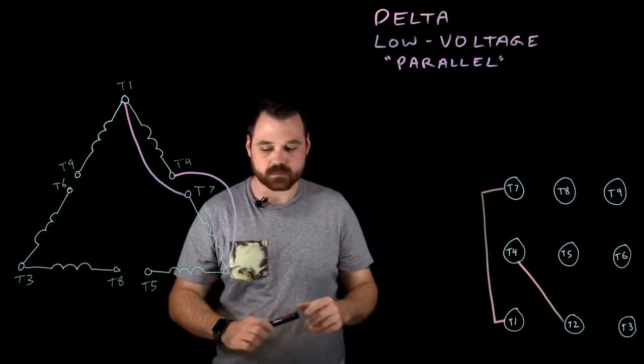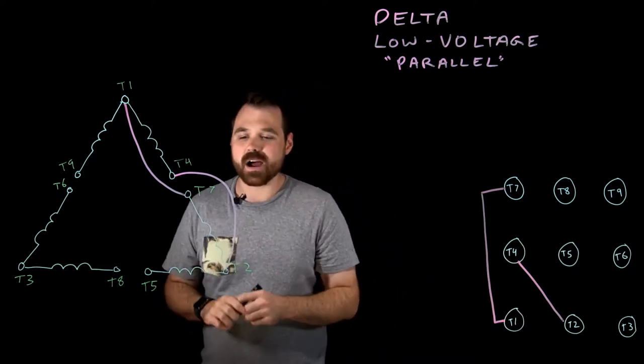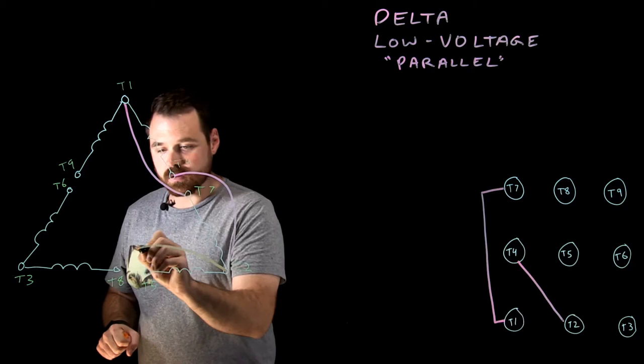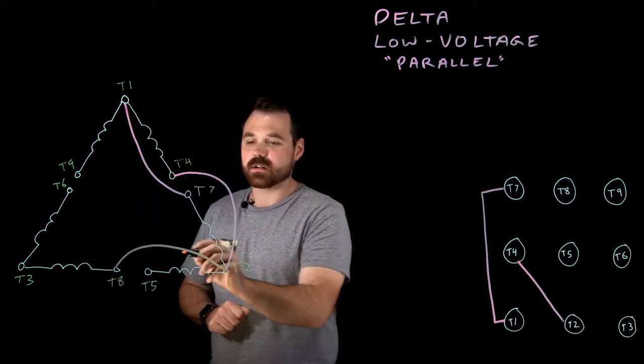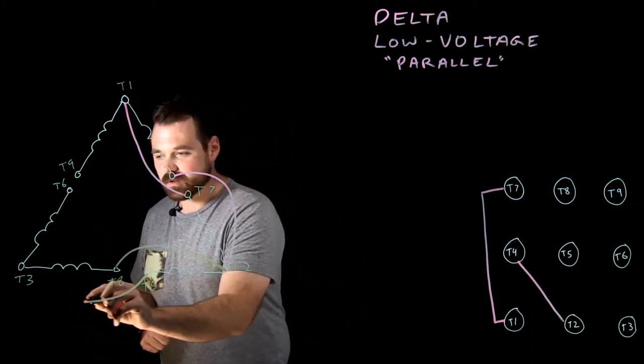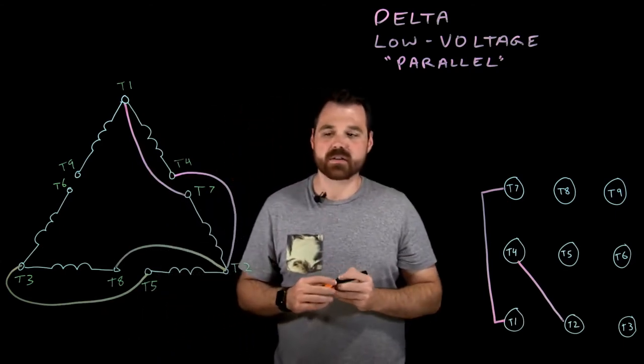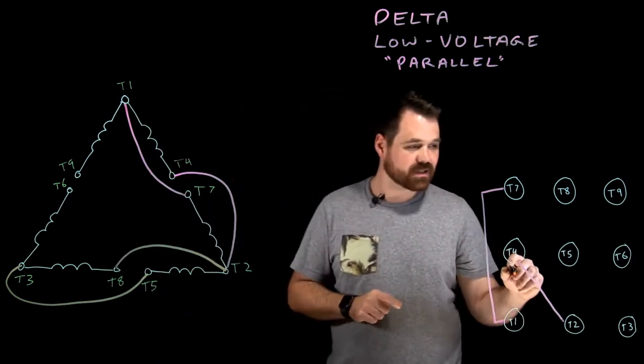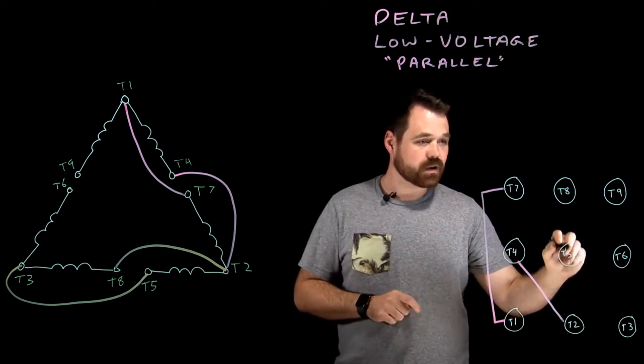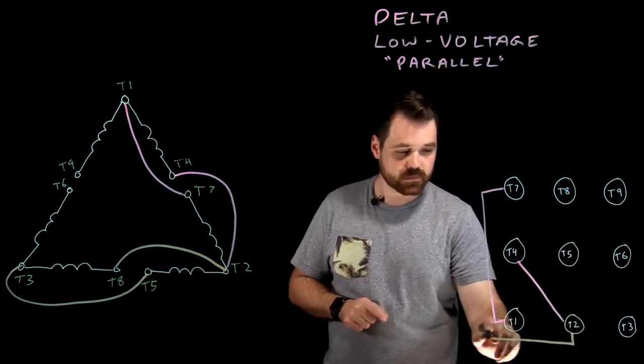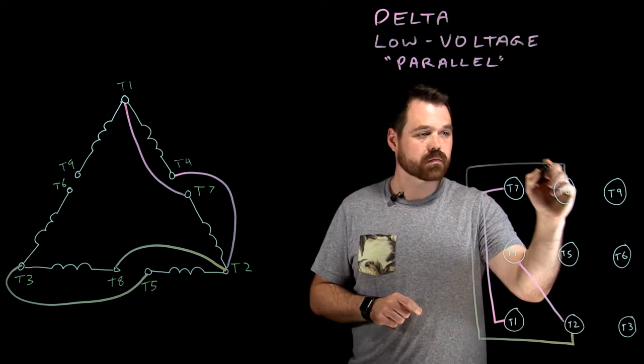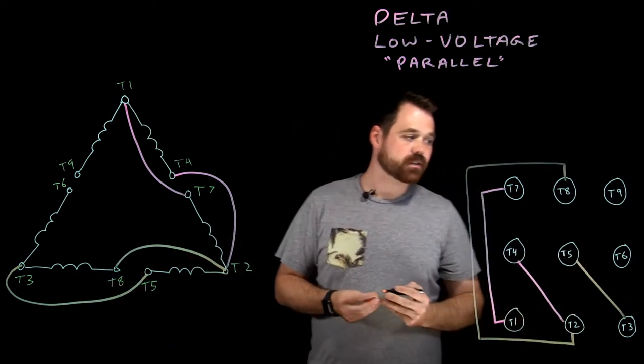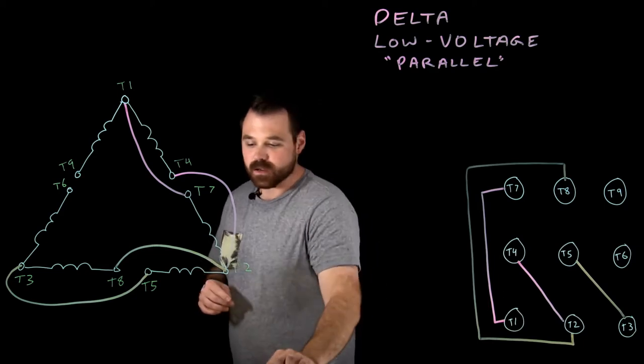Now again, on the bottom here, we want T2 to connect to T8 and T5 to connect to T3. So that will be our bottom connection: T2 to T8 and T5 to T3.